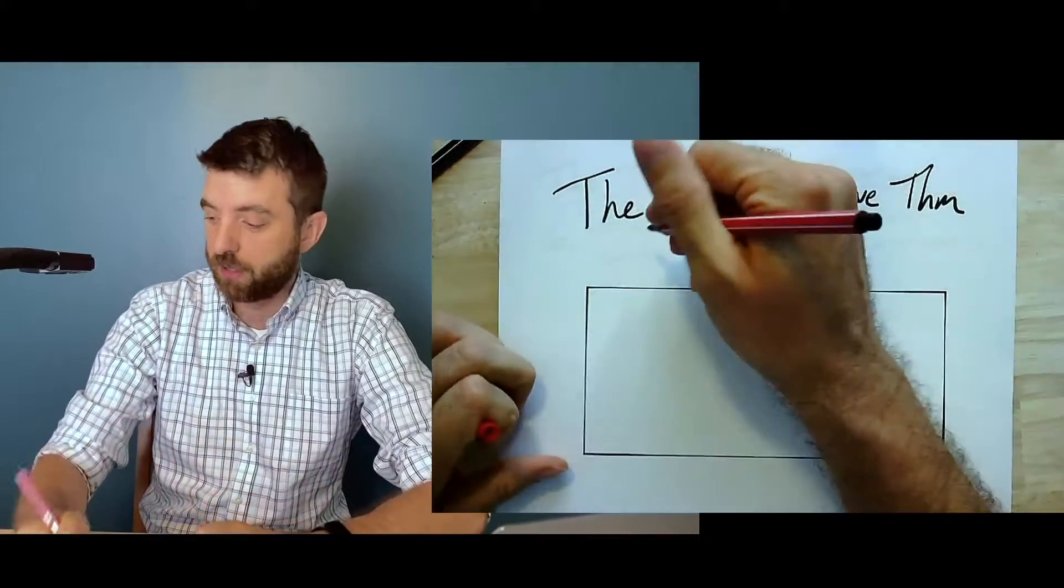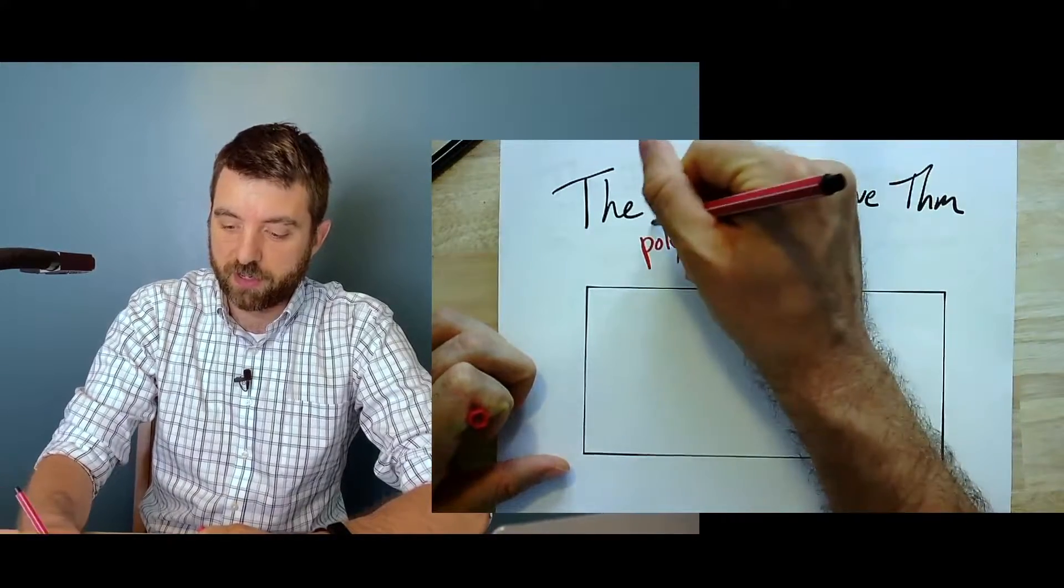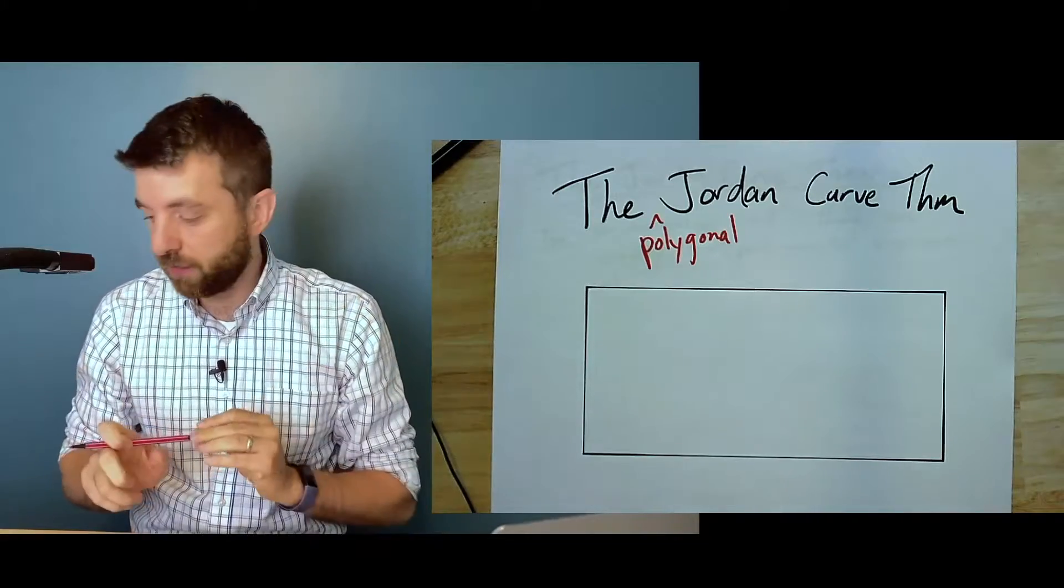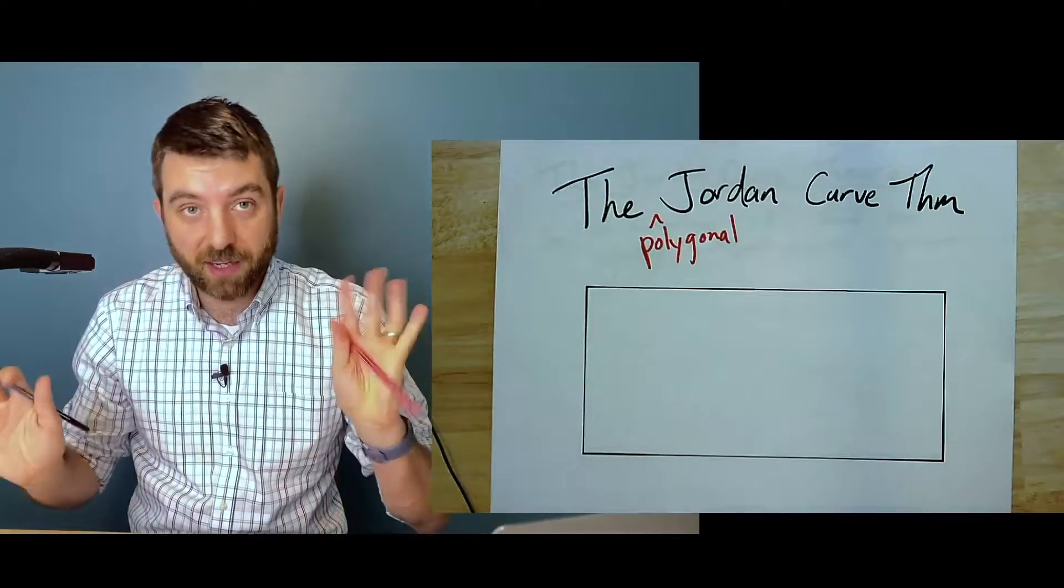It's the one that I'm going to call the polygonal Jordan Curve Theorem. We're limiting ourselves just to polygons here, and if you recall, this statement is something like...